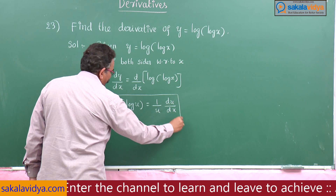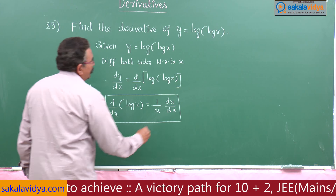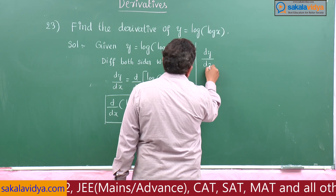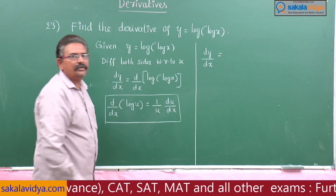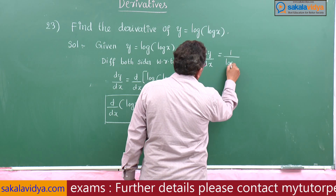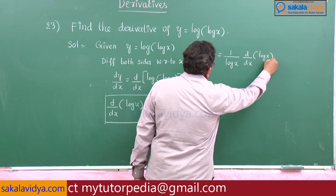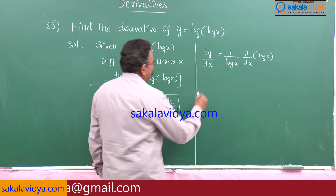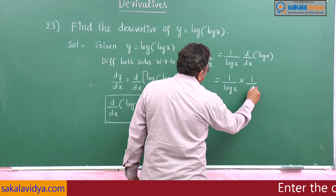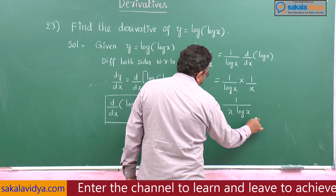Using this concept, dy by dx equals — here log x is nothing but u — so that means 1 by log x into d by dx of log x, which is 1 by x. So, 1 by log x multiplied by 1 by x, which can be written as 1 by x log x. This is the solution.